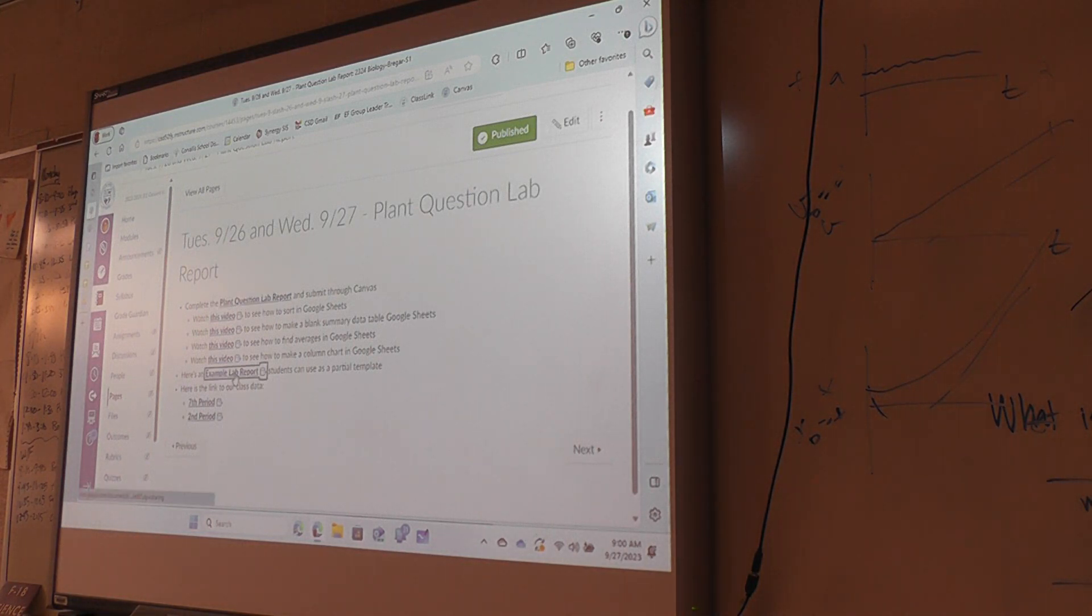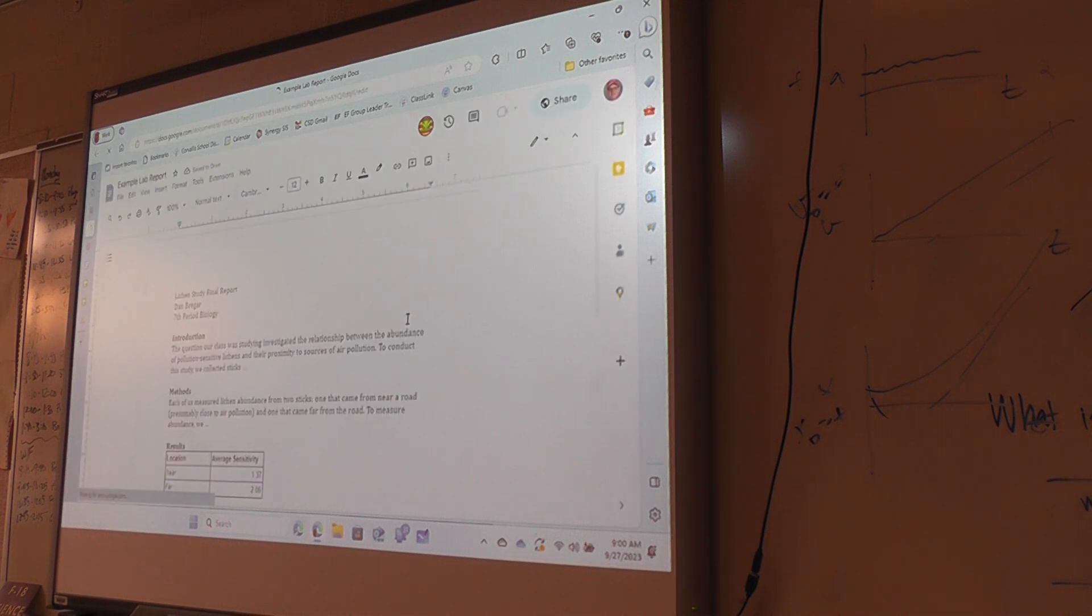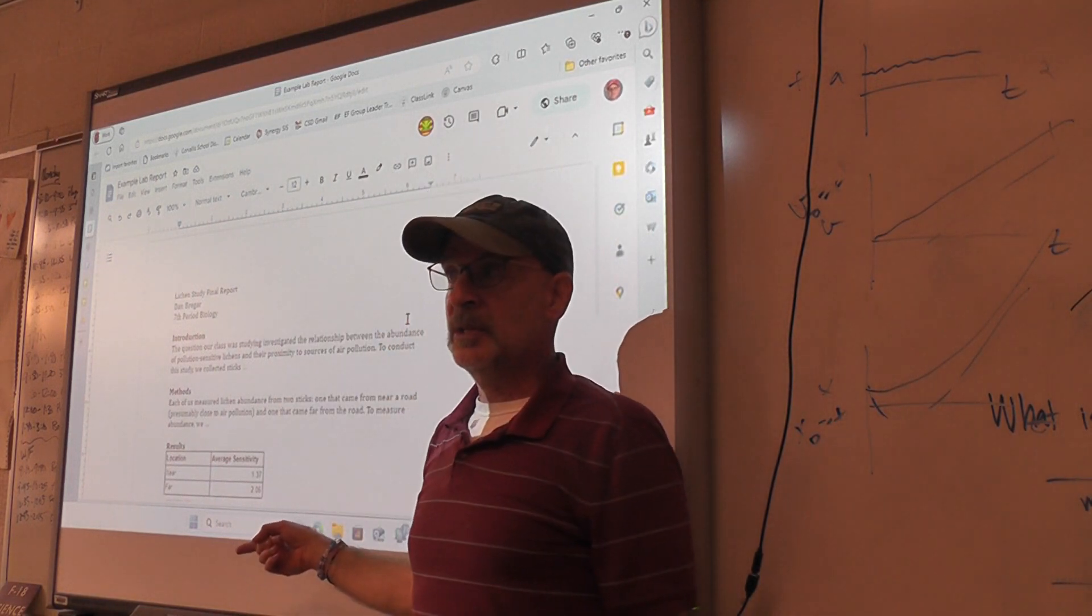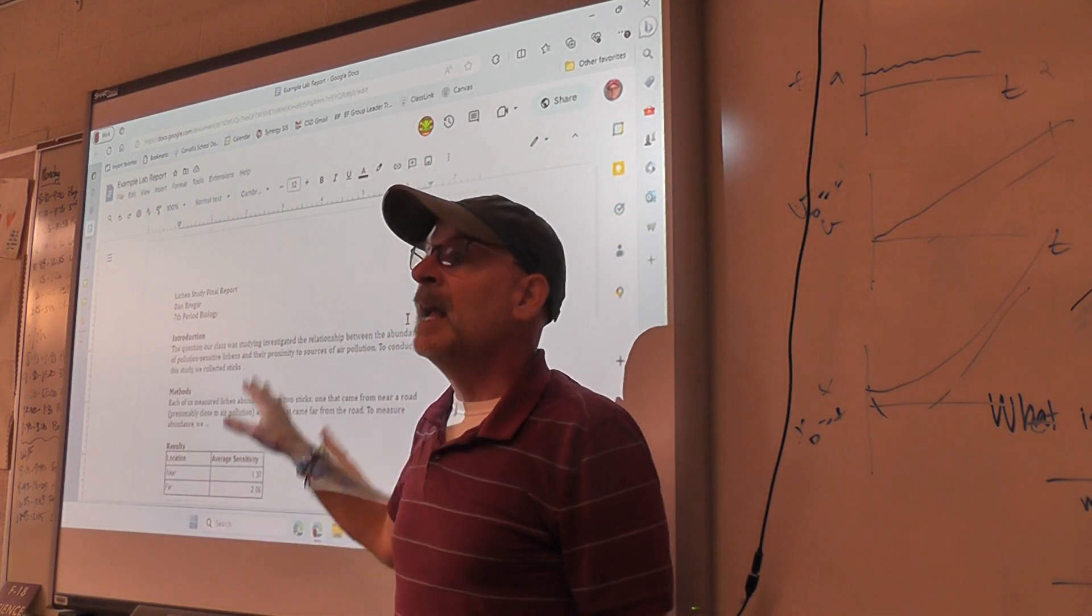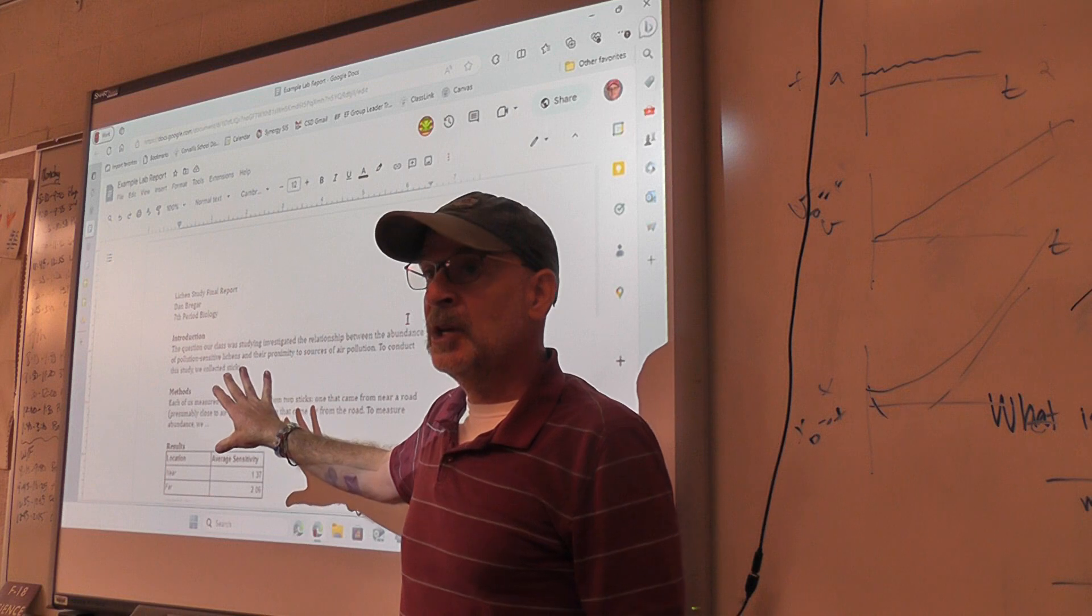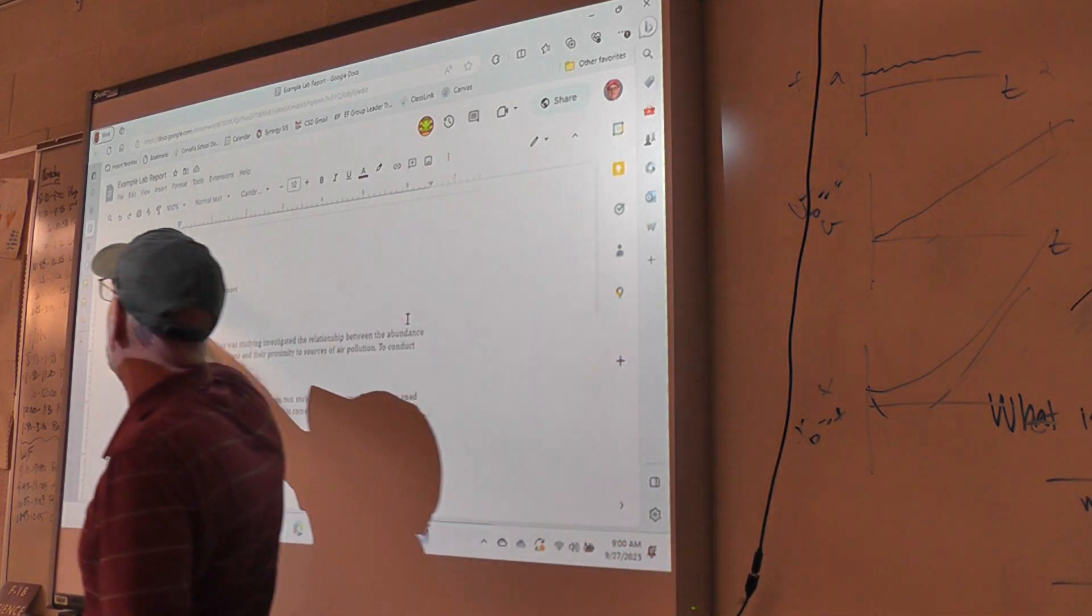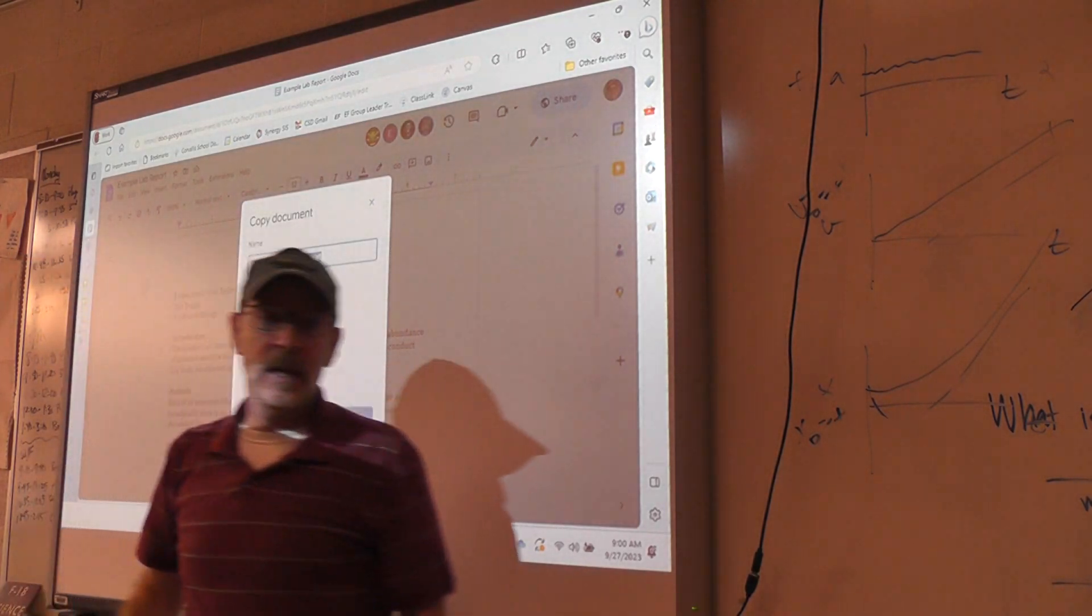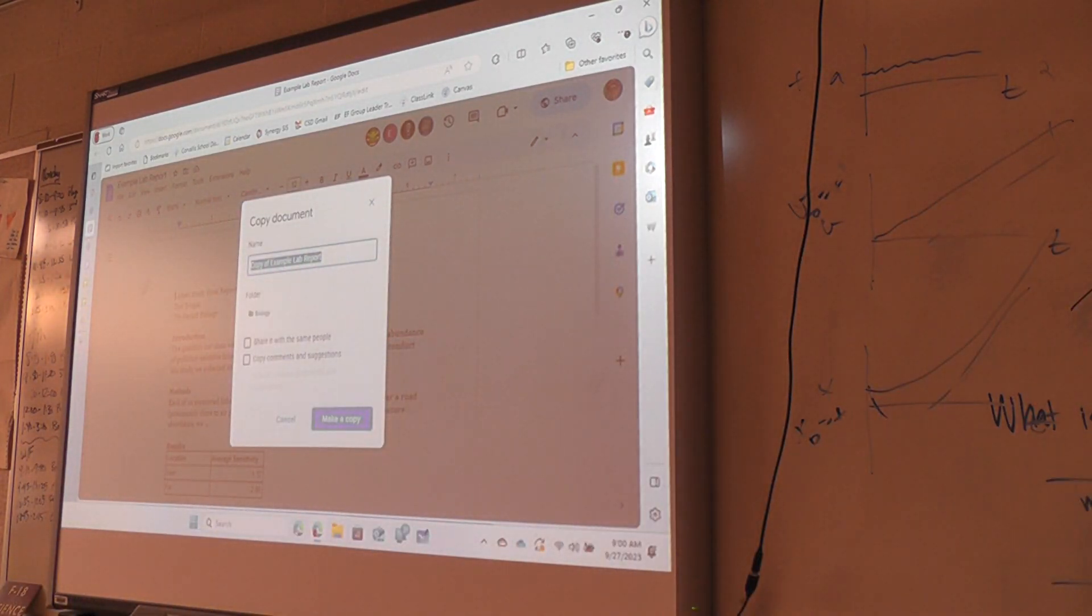Here is the example lab report format. And if you open that up, then you'll see a document that doesn't have instructions. This is an example. And this, if you want, you can just go to file menu, choose make a copy, and then give it a name, the same as before.